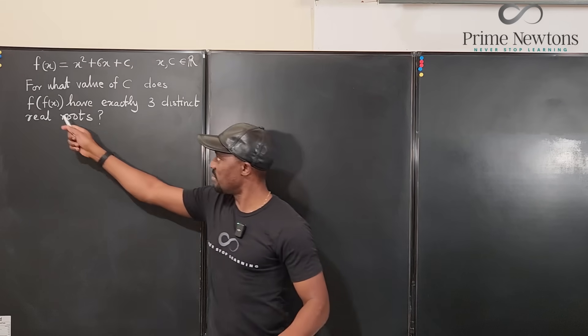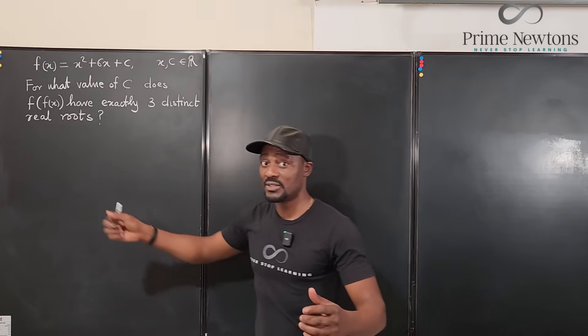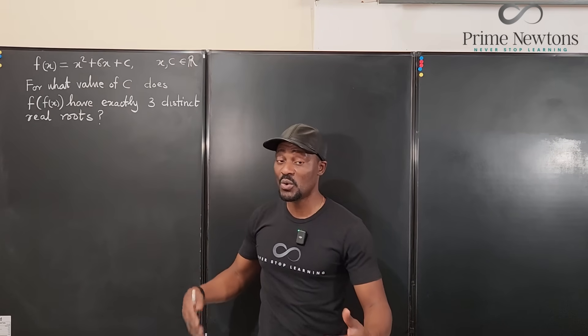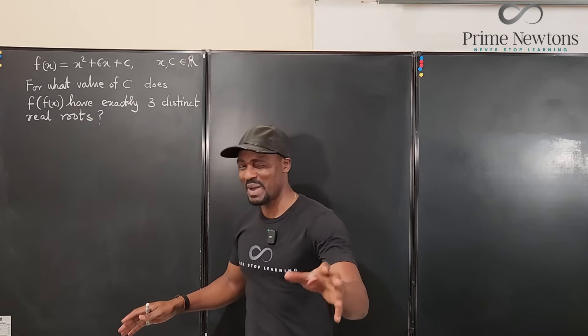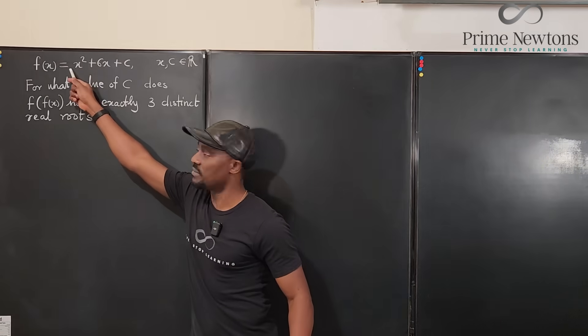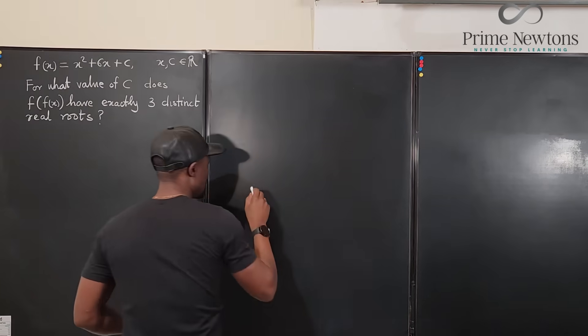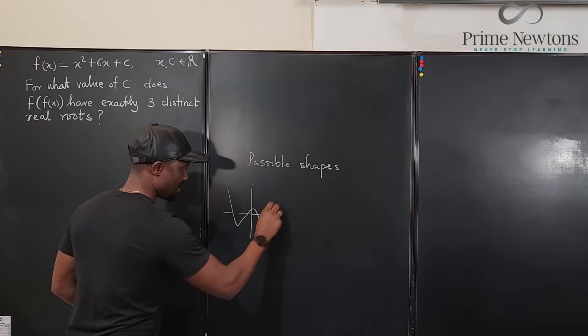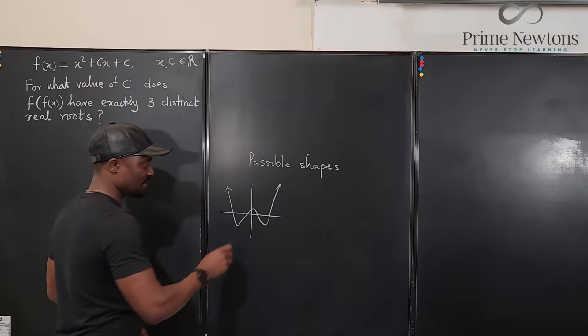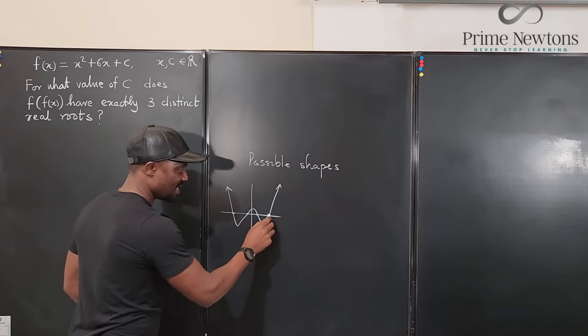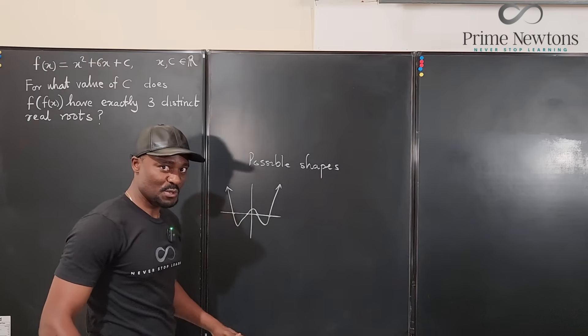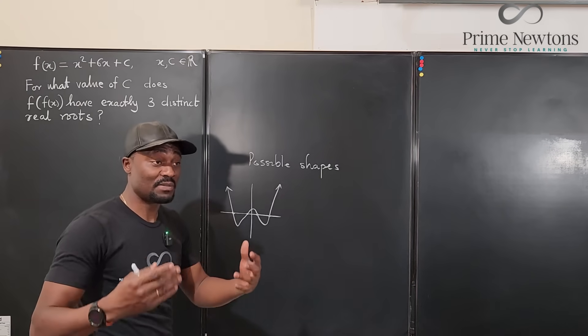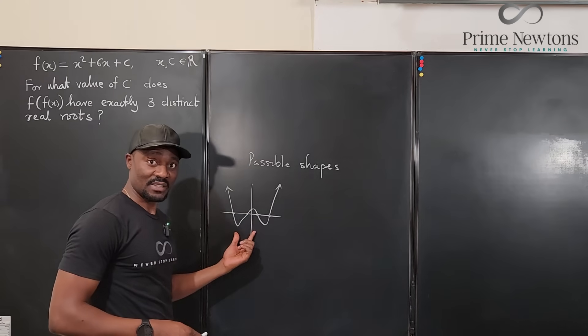Whenever you have a fourth degree polynomial, you're expected to have four roots. Now, some of those roots might be real or not real. And these are the possible shapes you might get. Since the leading coefficient is positive, we're going to have possible shapes. The most common is something like this. So if you have a polynomial this way, it has four real distinct roots. But that's not what we want. So we know the graph of the function we're going to get is not going to look like this.